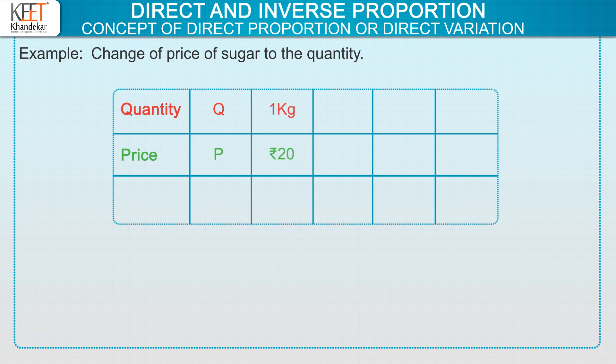If we buy 2 kg sugar, the price will be Rs. 40. If we buy 3 kg sugar, the price will be Rs. 60. And if we buy 4 kg sugar, the price will be Rs. 80.